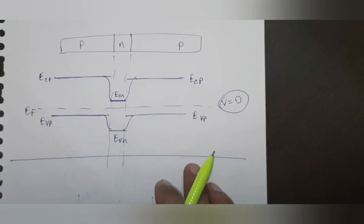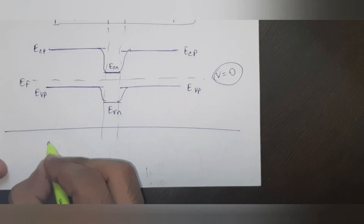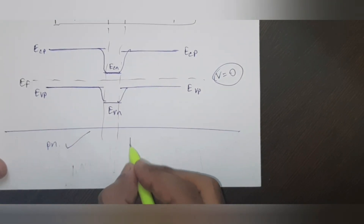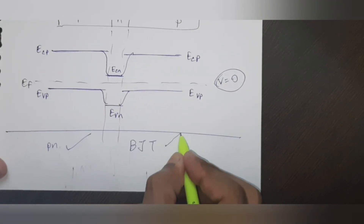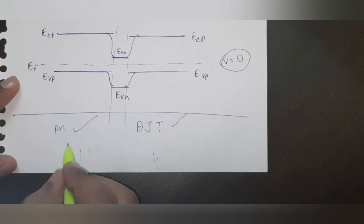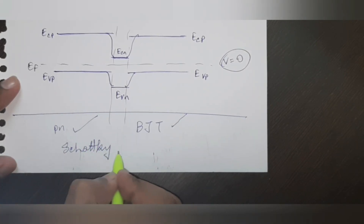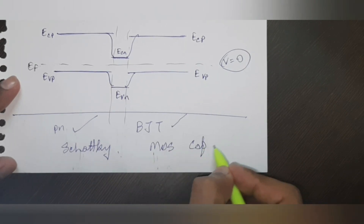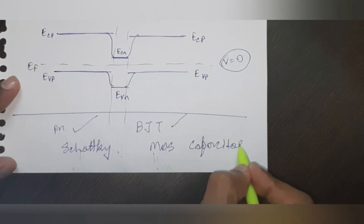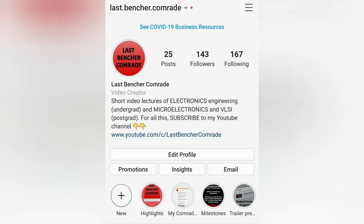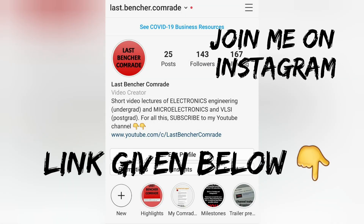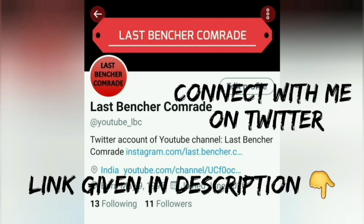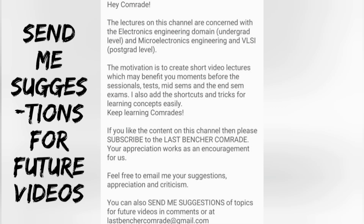That's all for today's video, but this topic of energy band diagrams is not yet over. In this video we discussed the PN junction diode energy band diagram and extended it to bipolar junction transistors. In the next video we shall discuss the band diagrams for the Schottky diode and MOS capacitor, and concepts like electron affinity and work function. If you found the content useful, please press the like button and subscribe to the channel.